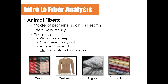Animal fibers are also considered natural fibers. They are made of proteins like keratin. They also tend to shed very easily, which makes them great for forensic evidence found at crime scenes as trace evidence. Examples of animal fibers include wool from sheep, cashmere from goats, angora from rabbits, and silk from caterpillar cocoons.